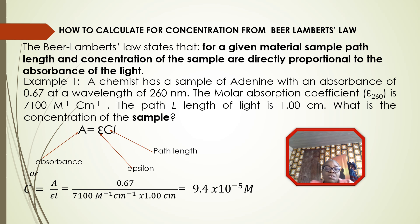The equation states: A = ε × c × l, where A is absorbance, ε is the molar absorption coefficient, c is concentration, and l is path length. Here is a question: a chemist has a sample of adenine with a molar absorbance of 0.67 at a wavelength of 260 nm. The molar absorption coefficient at 260 nm is 7,100 L·mol⁻¹·cm⁻¹. The path length of light is 1.00 cm. What is the concentration of the sample?